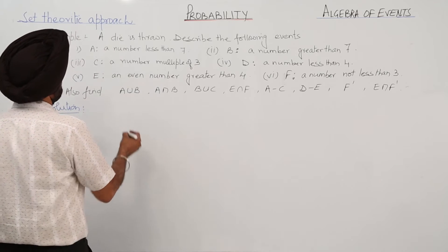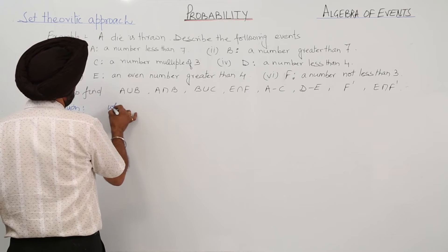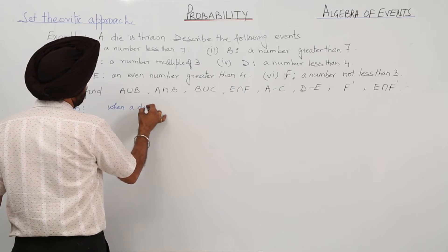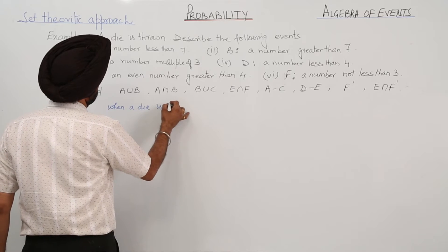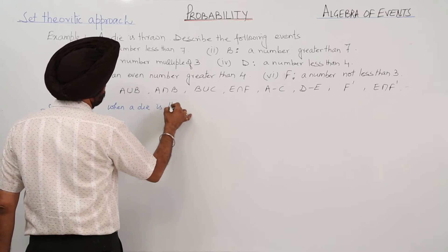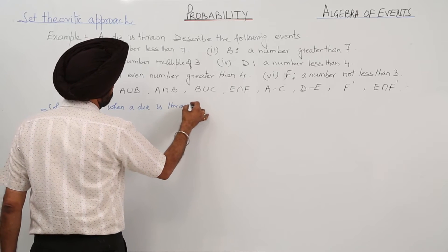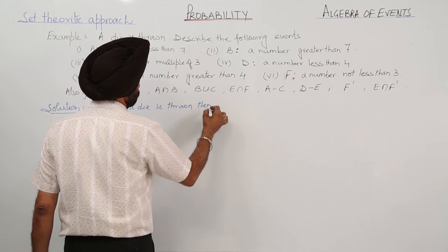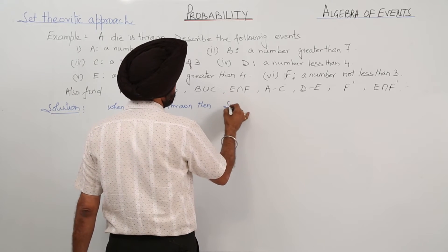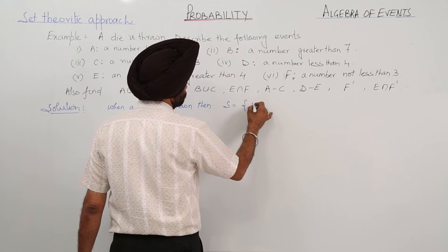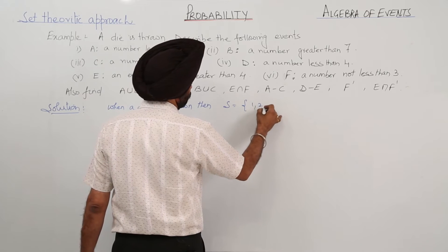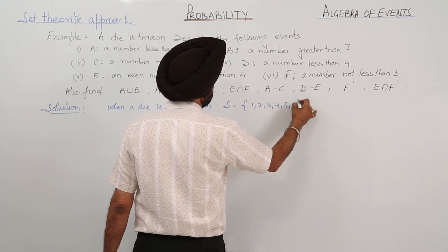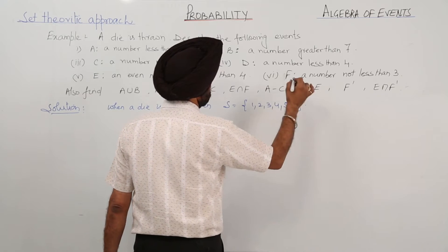When a die is thrown, the sample space S is denoted by {1, 2, 3, 4, 5, 6}.